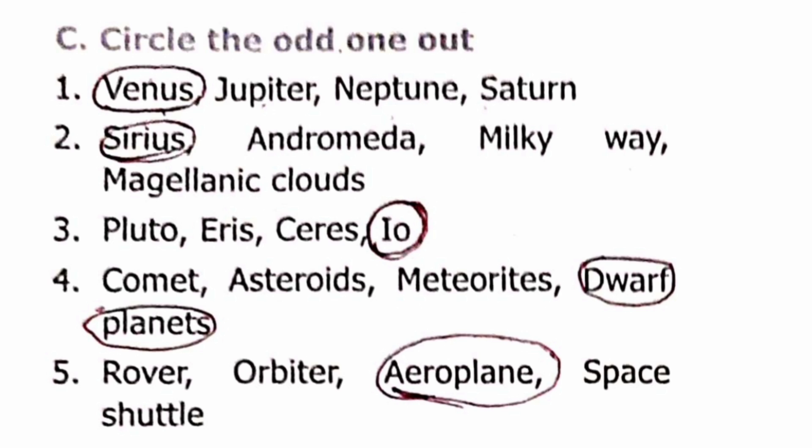Question 4: Options are Rover, Orbiter, Aeroplane, and Space Shuttle. The odd one is Aeroplane, because Rover, Orbiter, and Space Shuttle are used for space travel, while an Aeroplane travels within Earth's atmosphere.